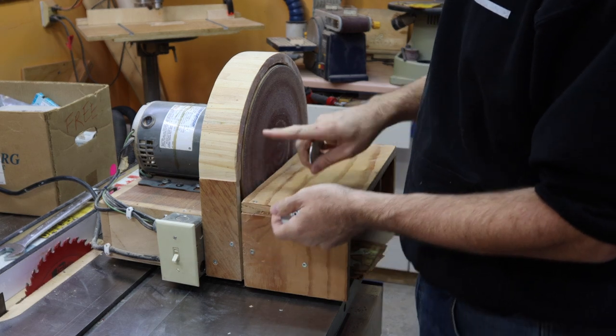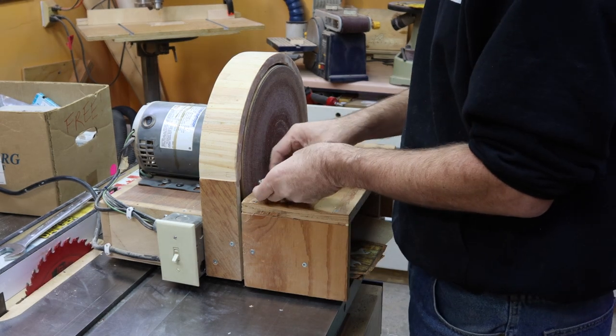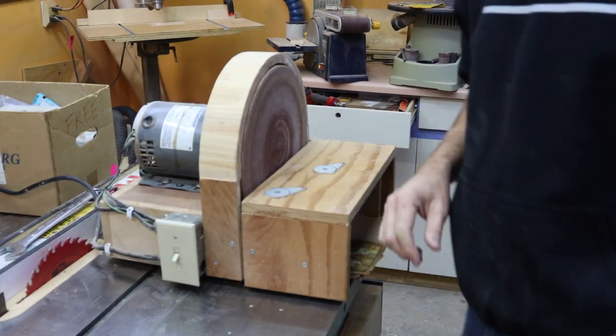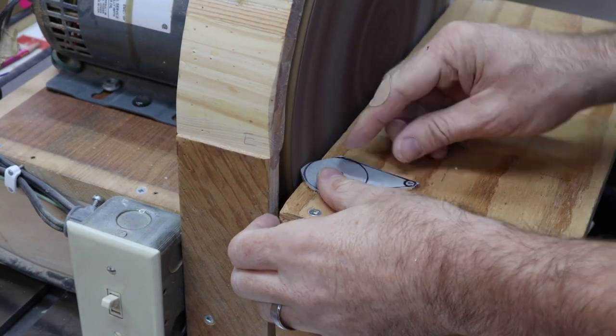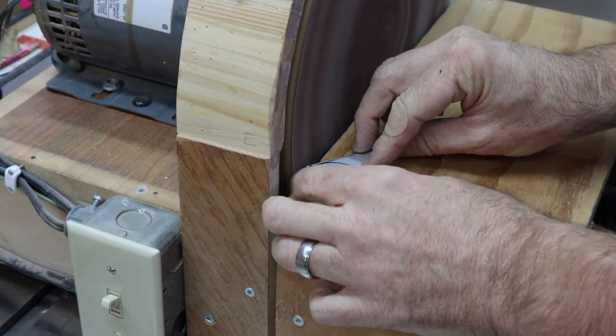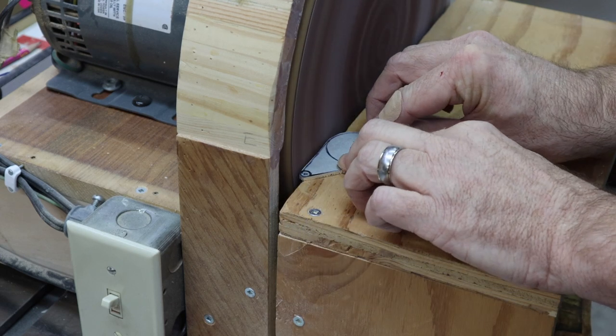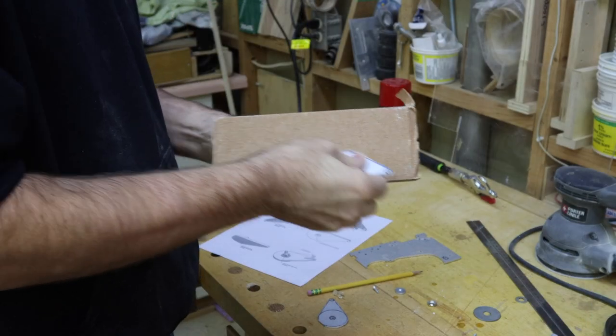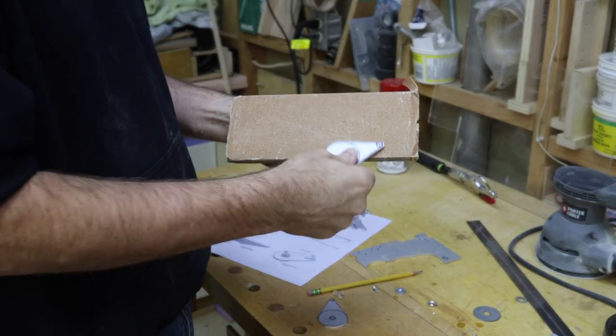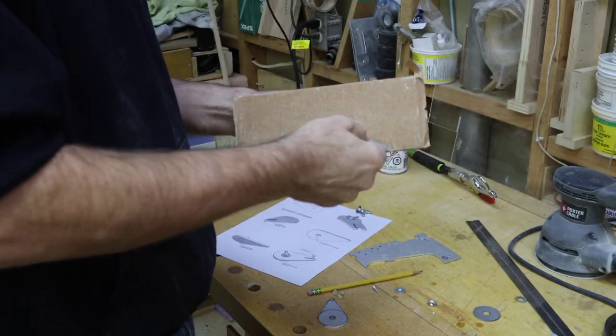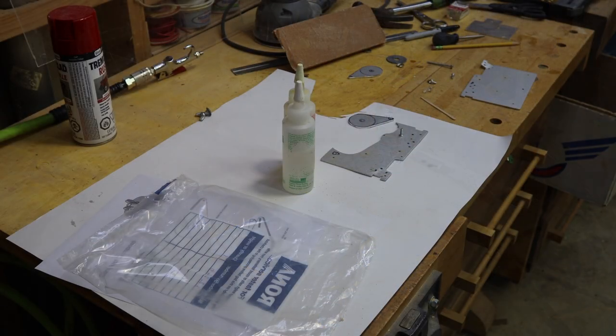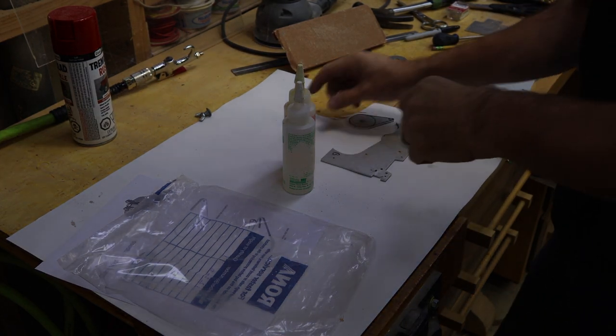And to clean them up I'm going to use my disc sander to round them down to the lines. A little bit of hand sanding to finish off some of the rough edges. And we're into the home stretch.